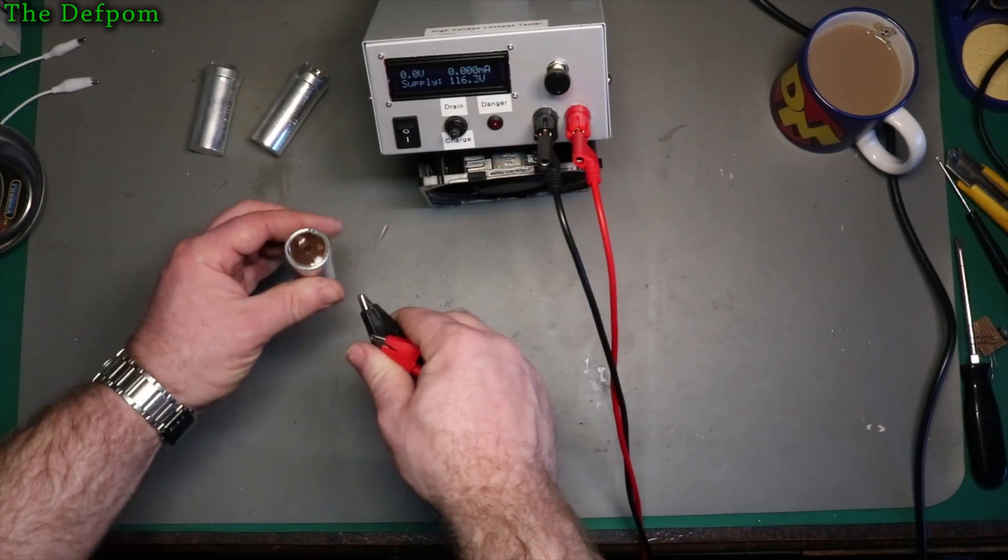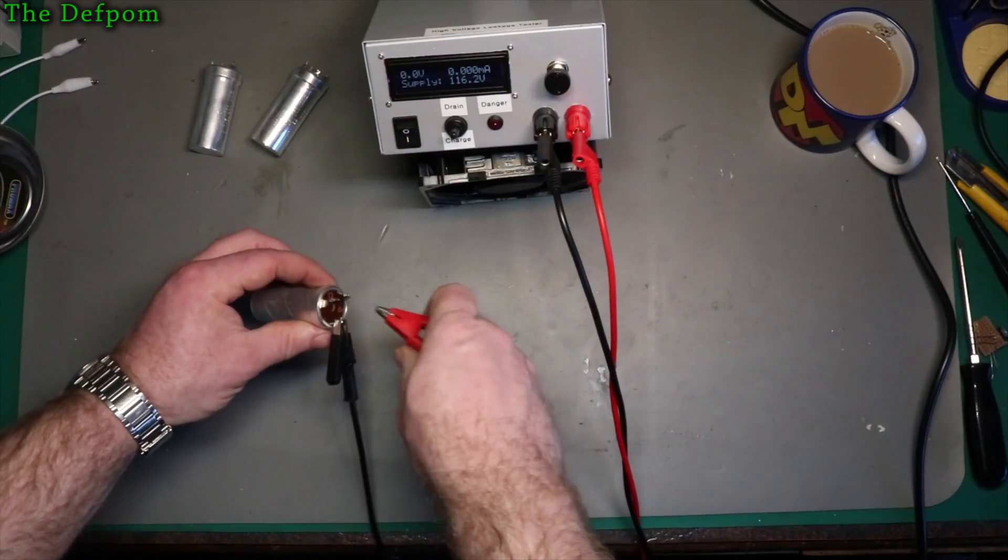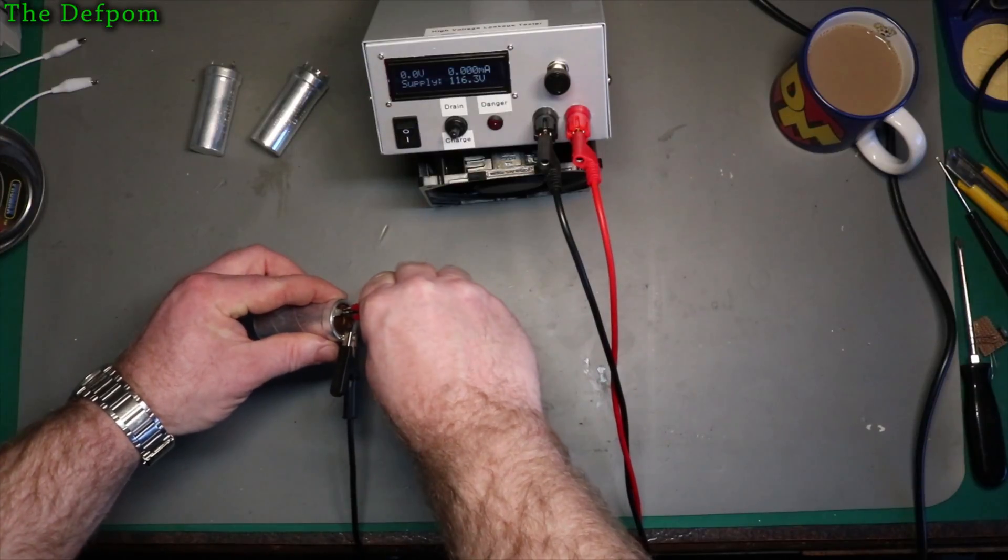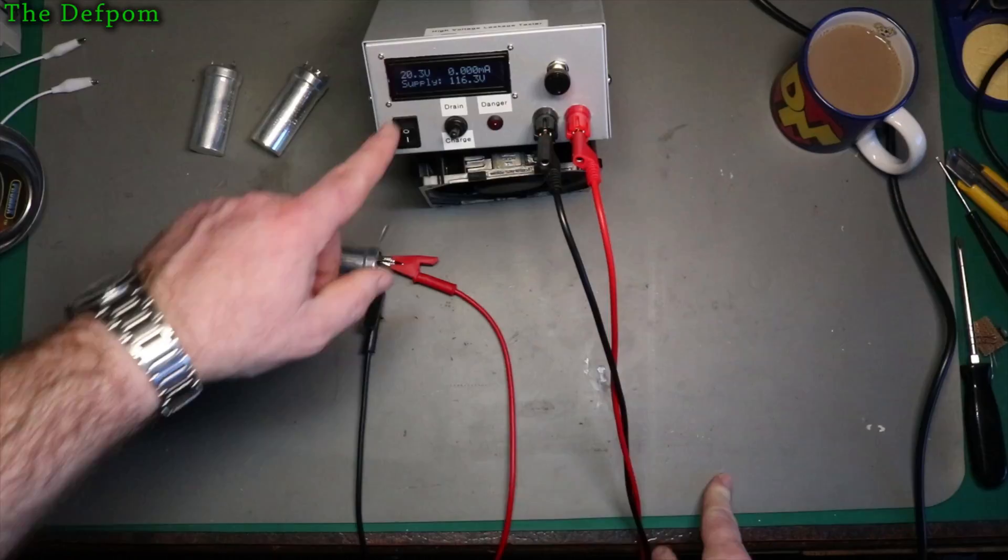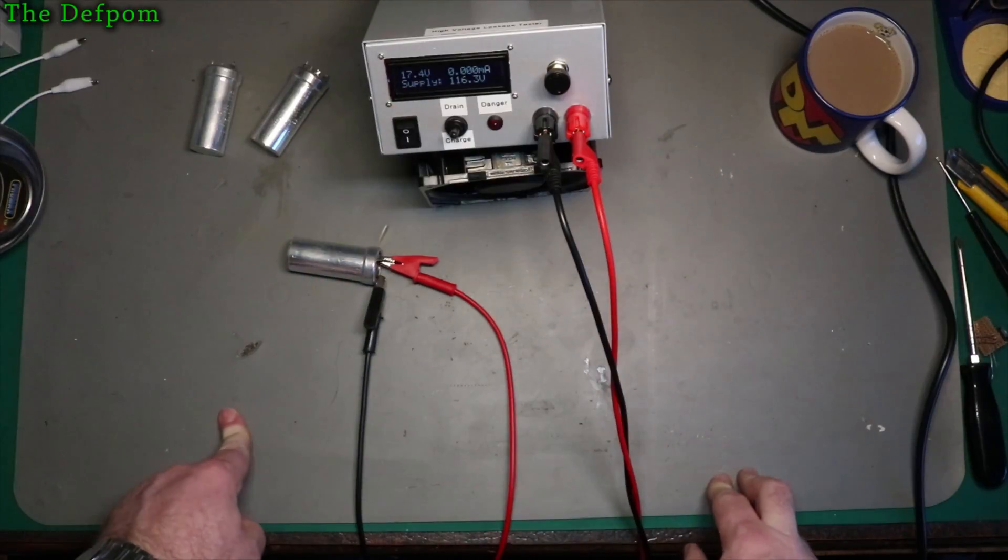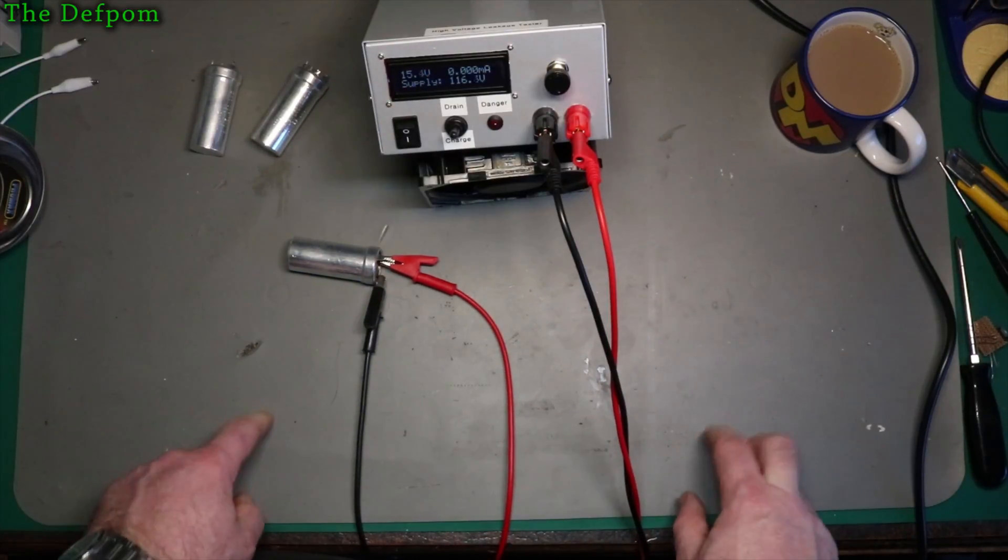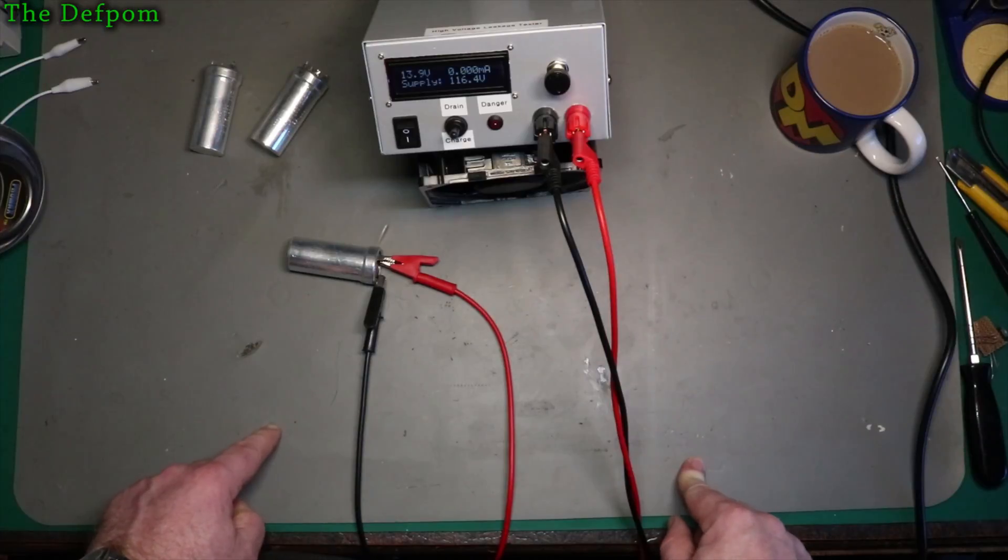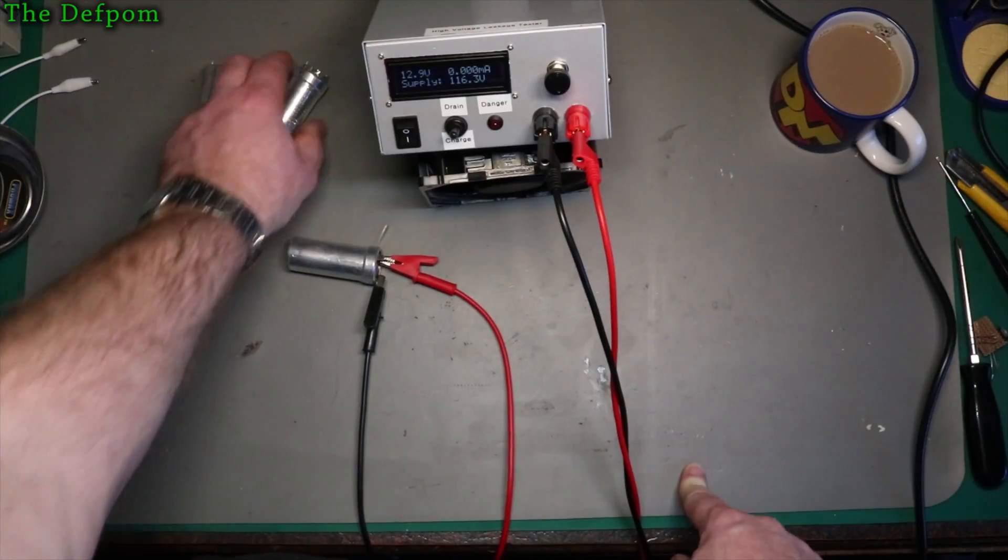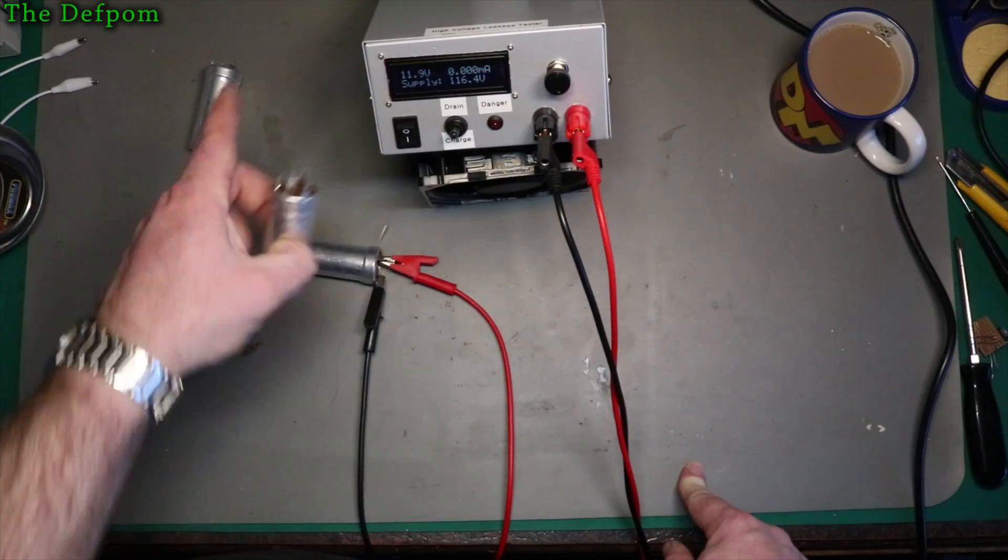Now I'll try this cap, which I know is the bad one, and let's check the results on this. Residual voltage, much higher. Now what does that mean? Well it probably means that it's got a high internal resistance, and it probably means that this one here has got a higher resistance than this one,